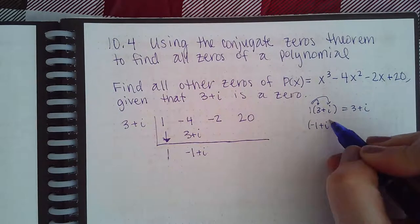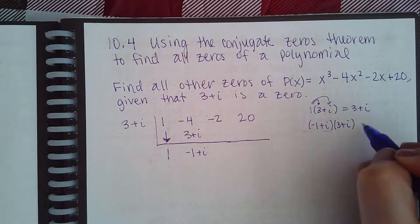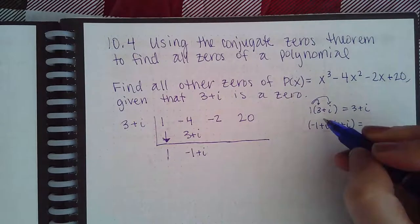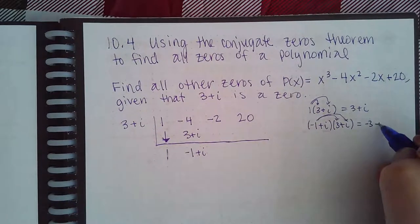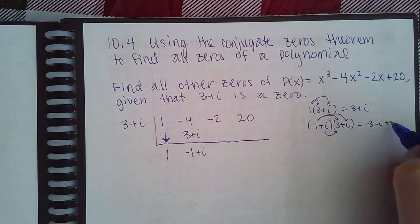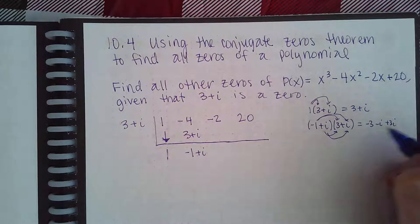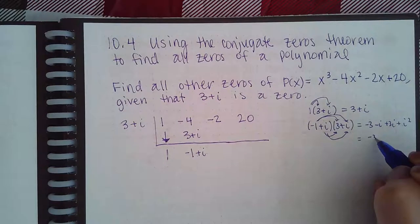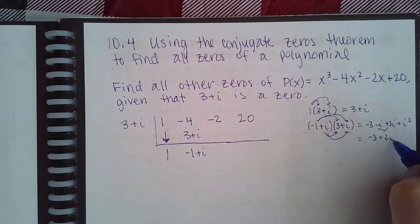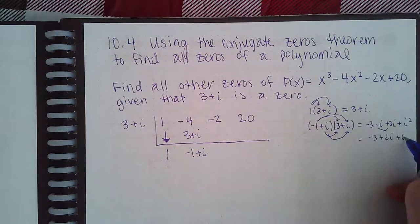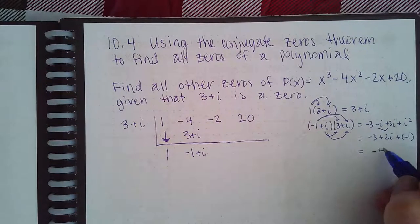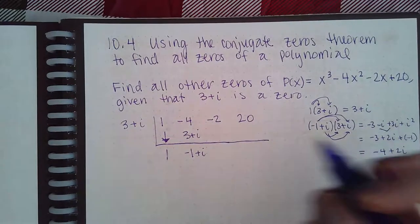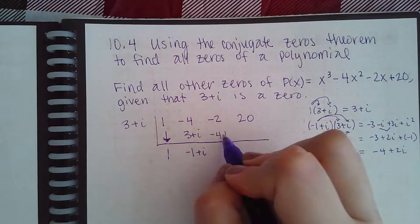Negative 1 plus i times 3 plus i - just foil that out. So we get negative 3, negative i, positive 3i, and then positive i squared. Negative 3, these become positive 2i, and this becomes plus a negative 1. So negative 3 plus negative 1 is negative 4 plus 2i, and that's the response that will go underneath here.